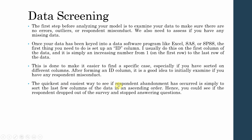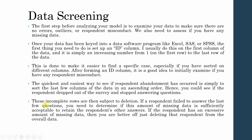The quickest and easiest way to see if a respondent abandoned your questionnaire is to sort the last few columns of the data in ascending order. You can then see if the respondent dropped out of the survey and stopped answering questions. These incomplete rows are subject to deletion. If the respondent failed to answer the last few questions, determine if the amount of missing data is sufficiently acceptable — for example, if they missed 40 to 50 percent of the questionnaire, you can delete that response.